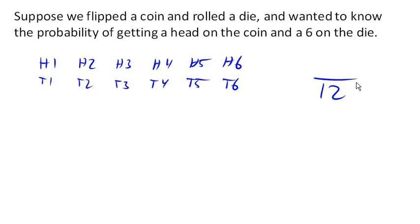How many of them would have a head on the coin and a 6 on the die? Well, only one of them. One out of those 12, and so there's a 1 12th probability of rolling a 6 on the die and getting a head on the coin.